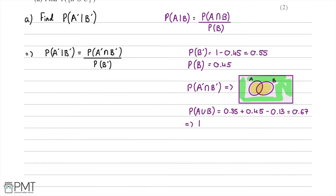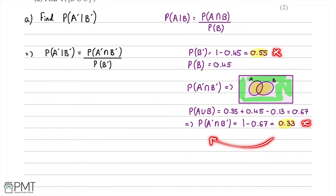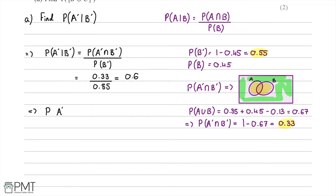The two important numbers are 0.33 and 0.55. Substituting back into our formula, we have P(A'∩B') divided by P(B'), which is 0.33 divided by 0.55. Putting this into our calculator gives 0.6. Therefore the probability of the complement of A given the complement of B is equal to 0.6.